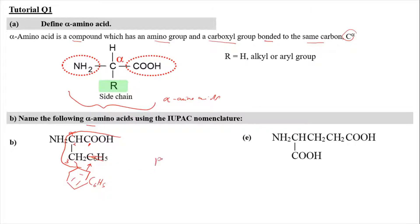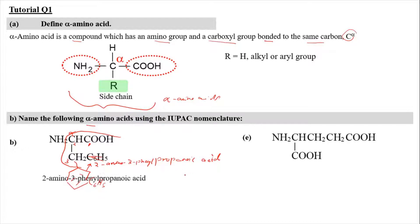So the longest carbon chain is 3, making it propanoic acid. At carbon number 3, we attach a phenyl group, giving 3-phenylpropanoic acid. And at carbon number 2, we attach an amino group. So the full IUPAC name is 2-amino-3-phenylpropanoic acid.